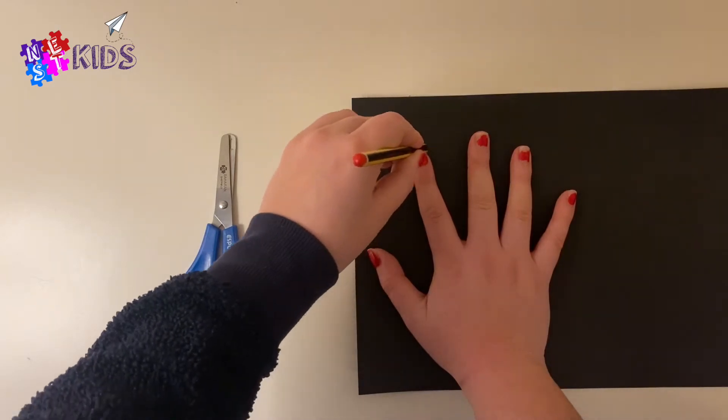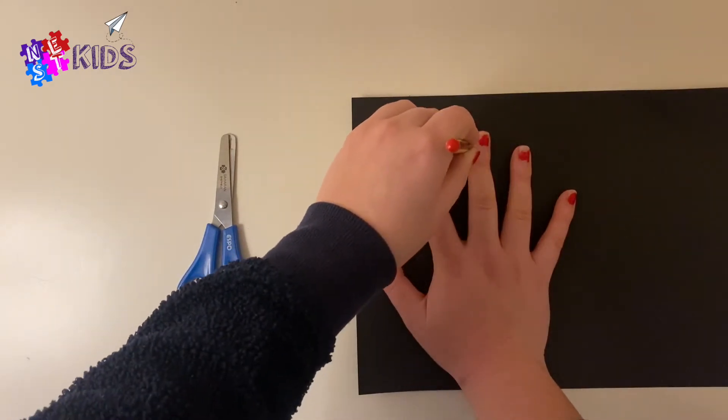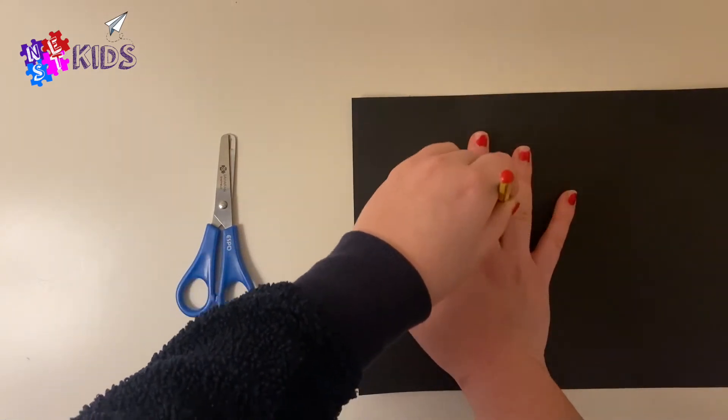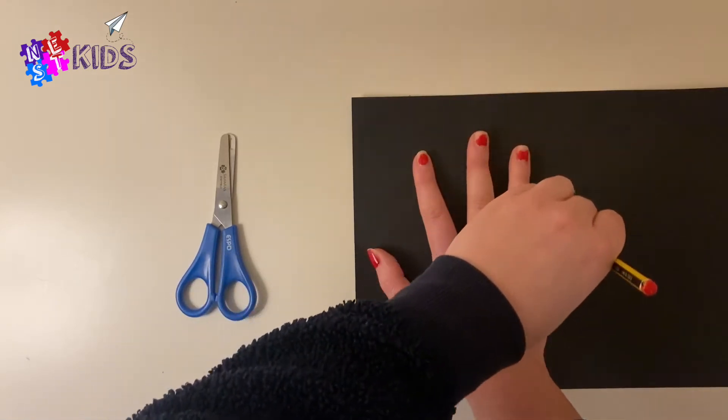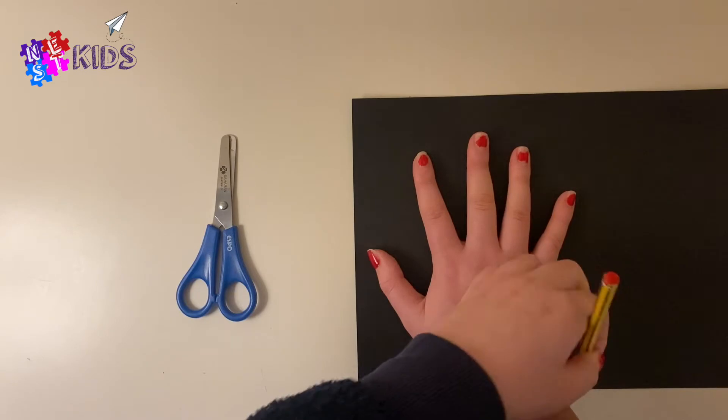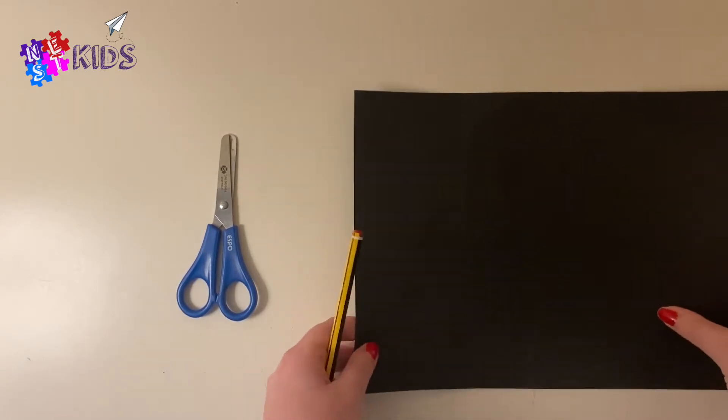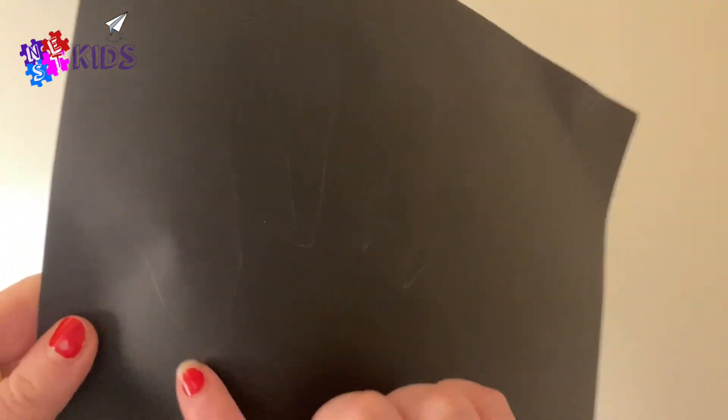Hopefully when you lift your hand up, you'll be able to see where the pencil is so you know where to cut out. I'm just going around my hand here, pressing down quite hard. There you go, you can see where I've drawn around my hand. That's the first step, so that's what you need to do.